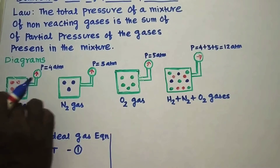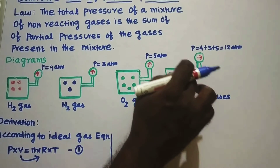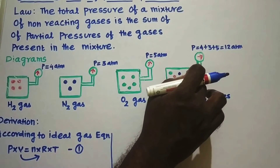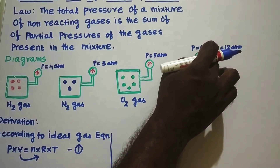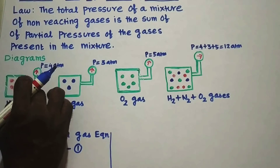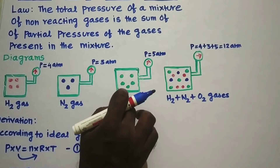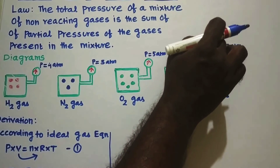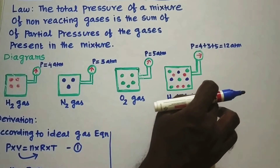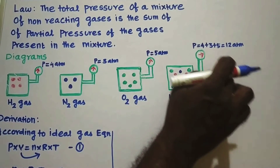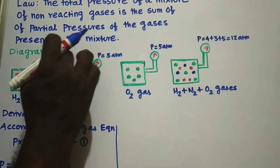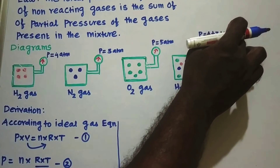Now, this hydrogen gas, nitrogen gas, and oxygen gas — all are taken in a mixer, so they form the gaseous mixture. This container is also connected with a pressure gauge. The pressure is equal to the summation of partial pressures of hydrogen gas, nitrogen gas, and oxygen gas. That is equal to 4 plus 3 plus 5, which equals 12 atmosphere. Therefore, it contains hydrogen, nitrogen, and oxygen gases, and as a result the total pressure is equal to 12 atmosphere.